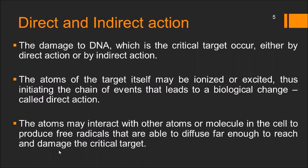In direct action, the atoms of the target itself may be ionized or excited, and this can initiate a chain of events that will lead to biological damage. In indirect action, the atoms may interact with other atoms or molecules in the cell to produce free radicals which could diffuse far enough to reach and damage the critical target — that is, the DNA.